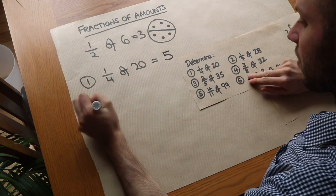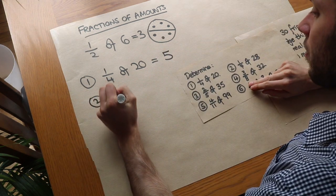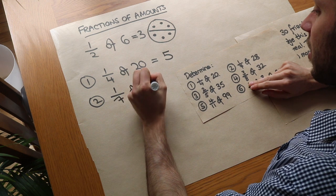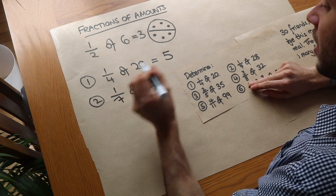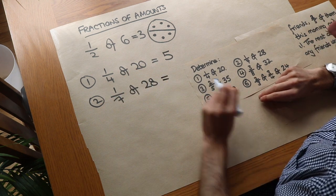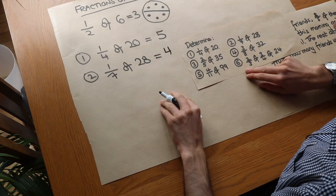What about the next one? I want to find one seventh of 28 — so I'm splitting 28 into seven. 28 divided by seven would be four.